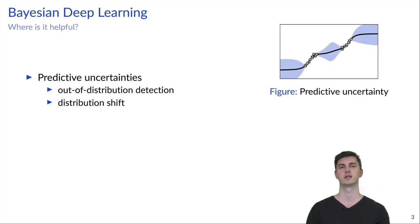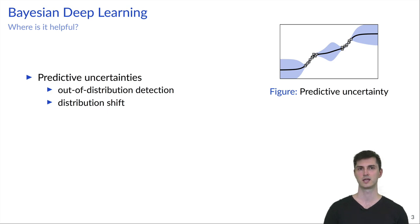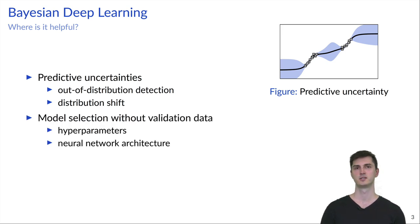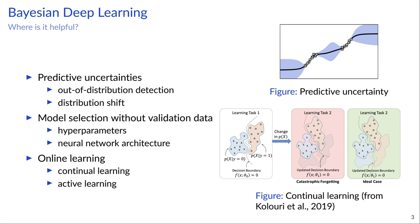To provide a bit more context, what is Bayesian Deep Learning actually useful for? The first application is predictive uncertainties. This is especially important for out-of-distribution detection and under distribution shift, where it can help avoid overconfident predictions. Another application is model selection without any validation data. This can be used to select hyperparameters or even the whole neural network architecture. And finally, it can be used for online learning, especially for continual learning and active learning.